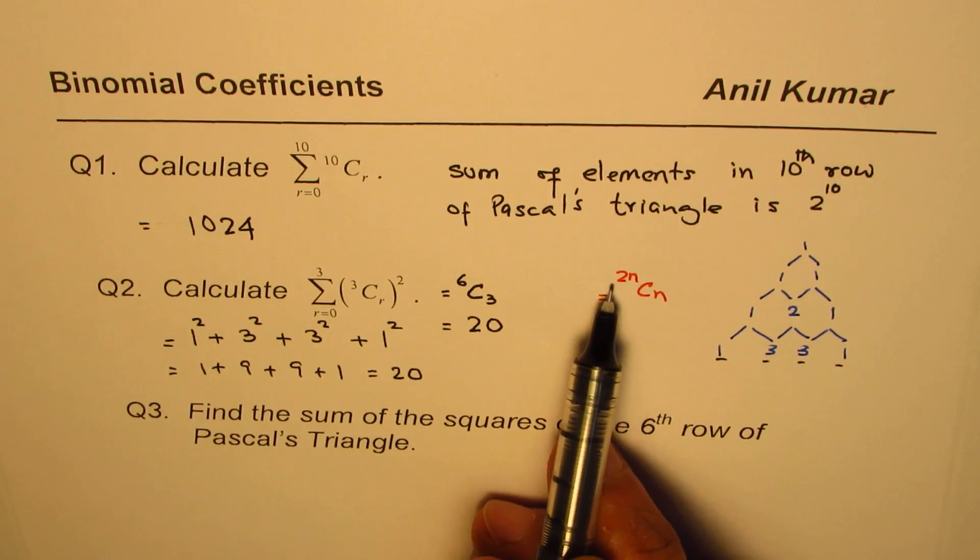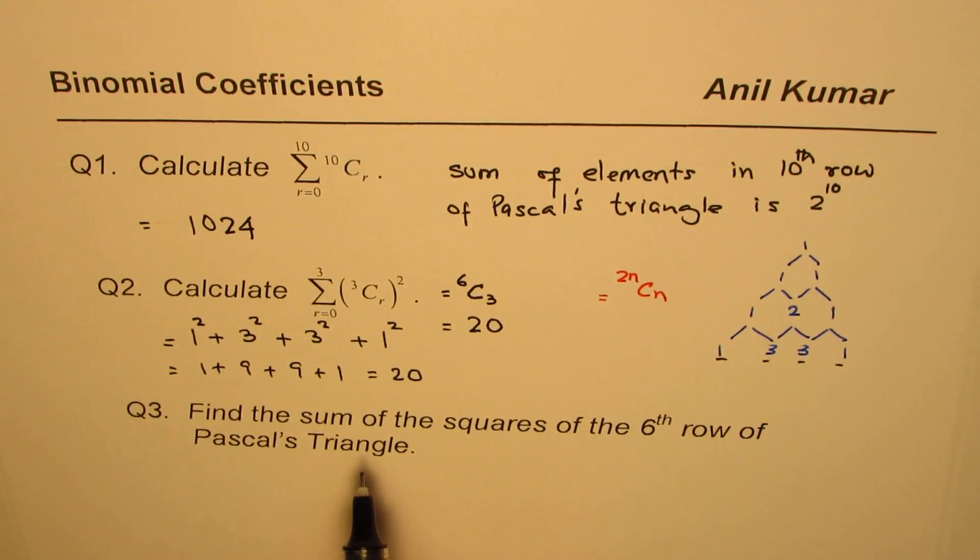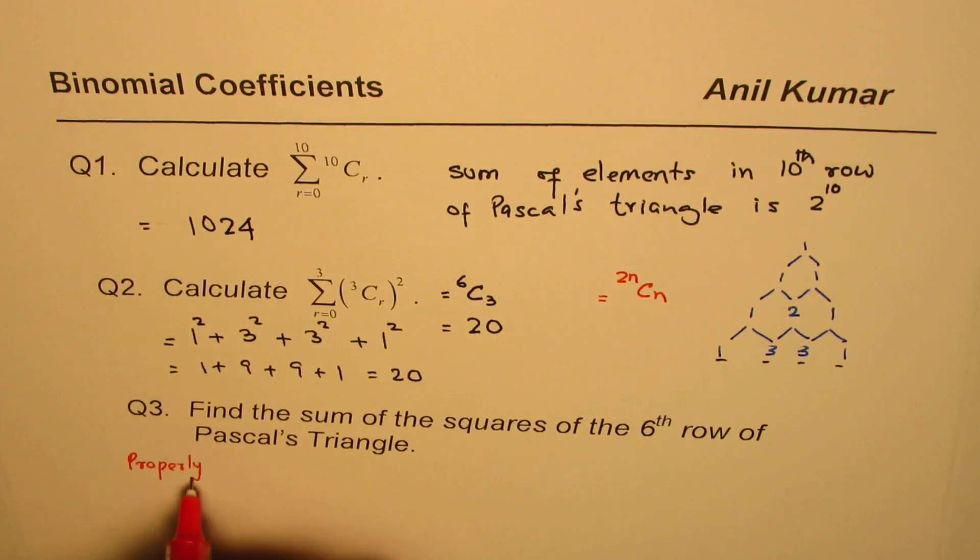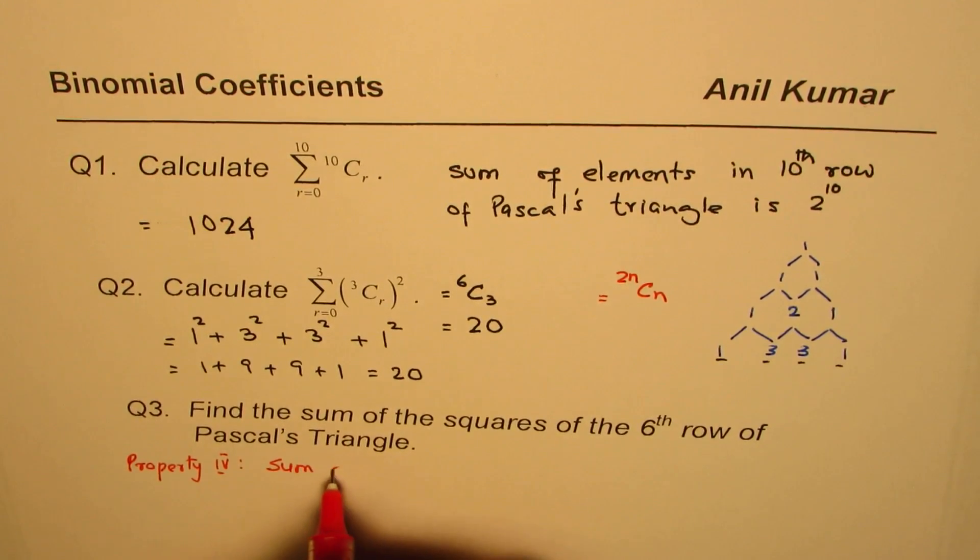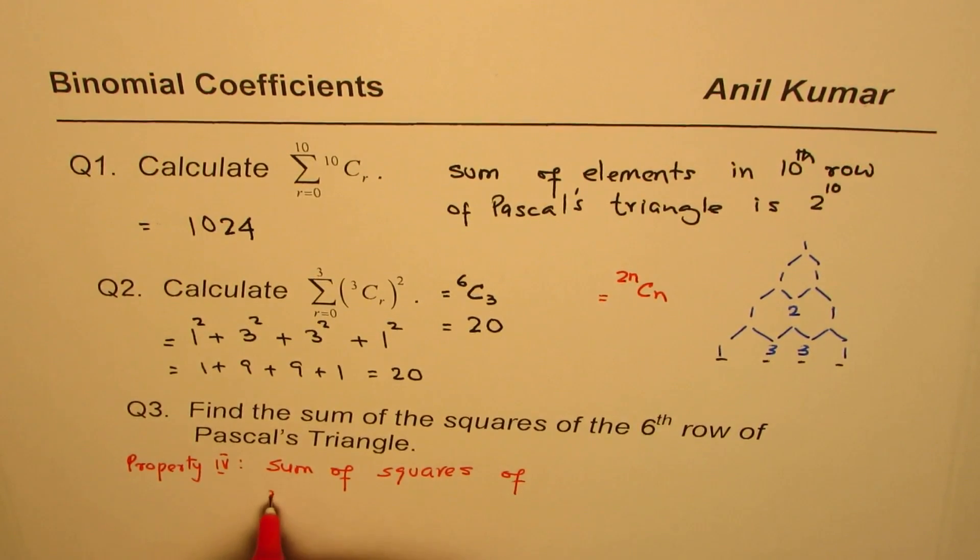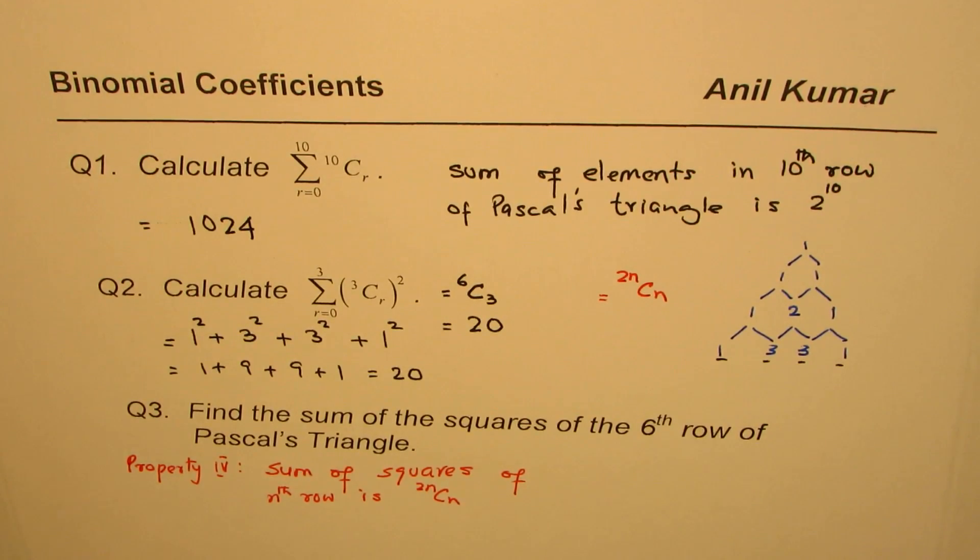You have to find 2n choose n. Question number 3 is direct application of this particular property. So let's see, sum of squares of nth row is 2n choose n. Let me write down here the property itself. We call it property 4. And that is sum of squares of nth row is 2n choose n. So that is the property.